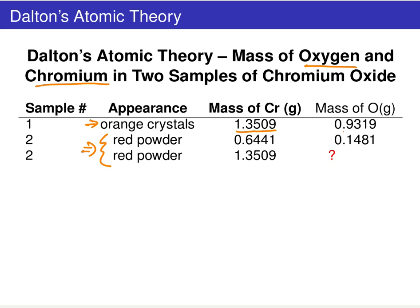If you do a similar decomposition on the red powder, for that given sample he found 0.64 grams of chromium and 0.14 grams of oxygen. For the third line item we've got another sample of red powder, but in this sample we have a different mass of chromium.